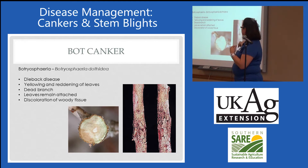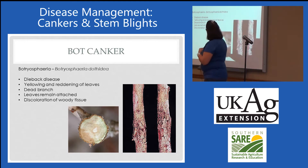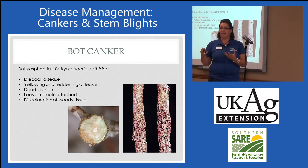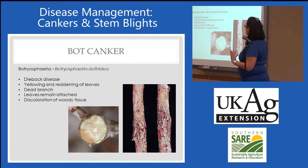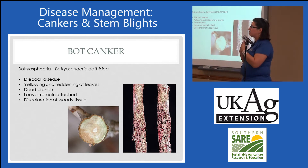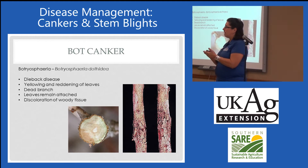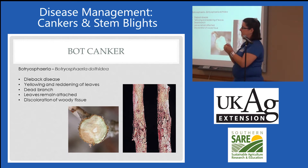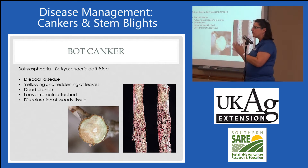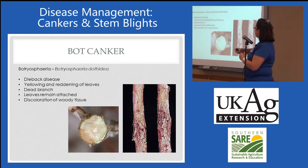Bot canker is going to girdle — you can see kind of the browning here as it starts girdling. As this pathogen moves through woody tissue, it kills that tissue and starts girdling it. You're going to see a reduction in uptake of water and nutrients to the tops of plants.